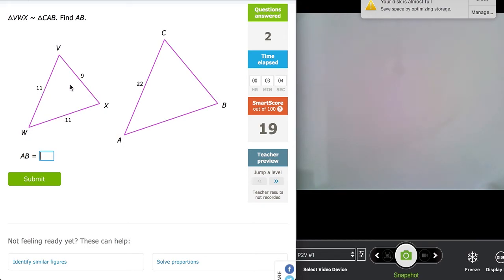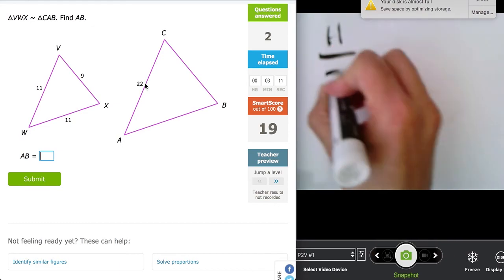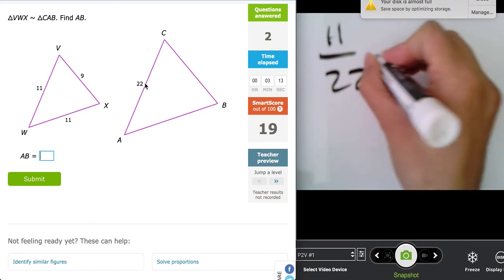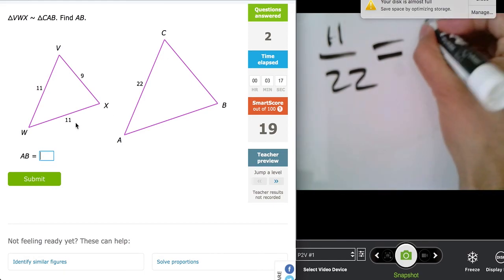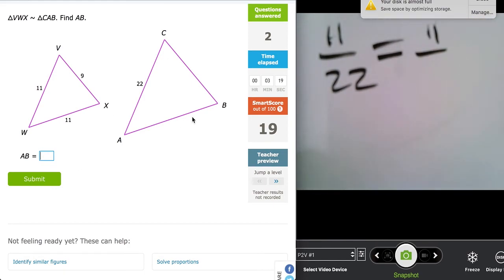11 corresponds to 22. So I'll write it out. 11 corresponds to that 22. So 11 is to 22 as, in this case, 11 is to the side we're looking for, AB. This is our variable. What we're looking for.